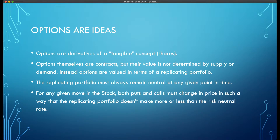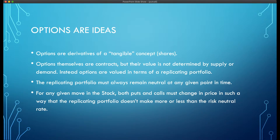When we buy or sell options, the market maker on the other side of our transaction is not holding anything. When you buy a call, we are holding a long call in our portfolio, but what is the market maker on the other end actually holding? He's holding a replicating portfolio for the call. The option dealer is replicating it with instruments that actually exist. Otherwise, it would be a chicken and egg problem.